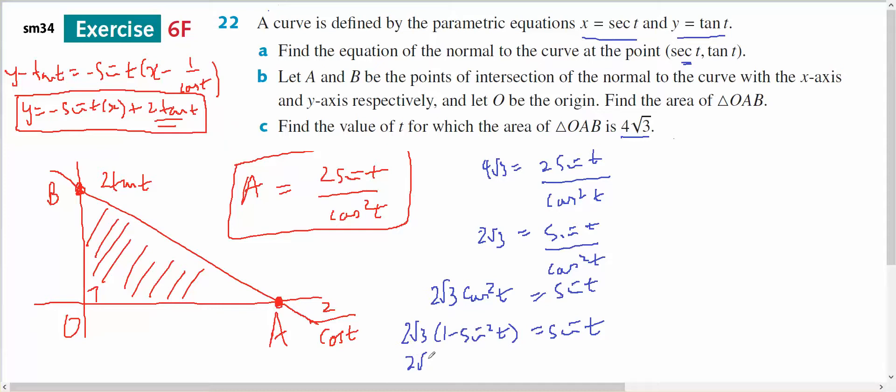So I've got 2 root 3 minus 2 root 3 sine squared of T equals sine of T. If I bring everything over to the right-hand side, I've got 0 equals 2 root 3 sine squared of T plus sine of T minus 2 root 3.